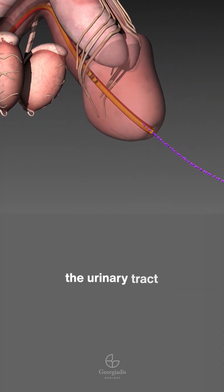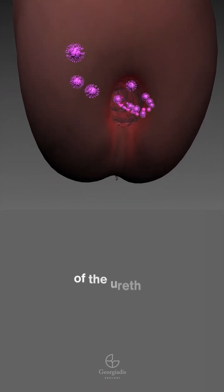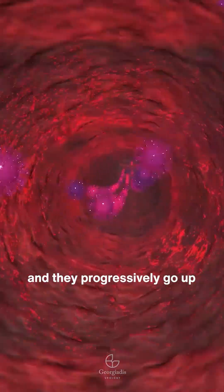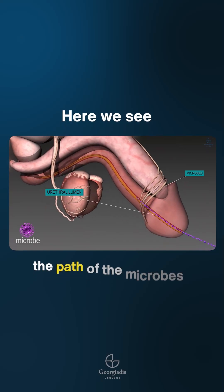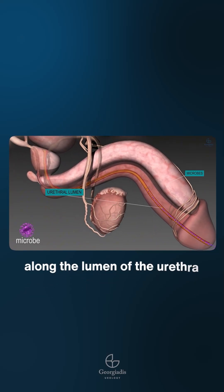The microbes enter the urinary tract through the outer opening of the urethra and progressively go up the lumen of the urethra. Here we see the path of the microbes along the lumen of the urethra.